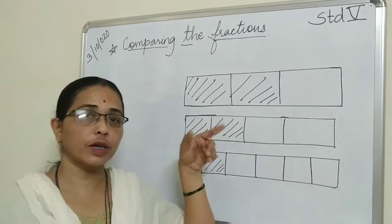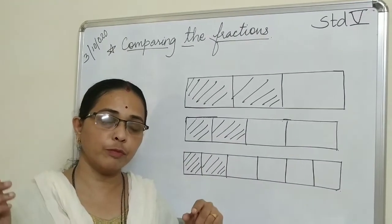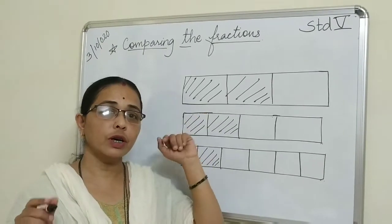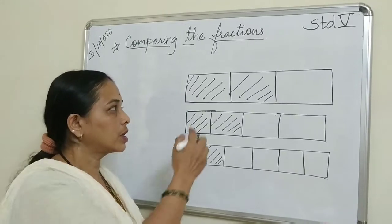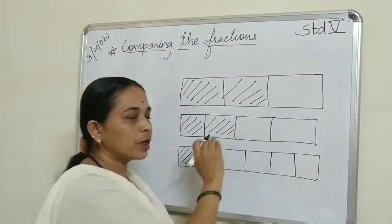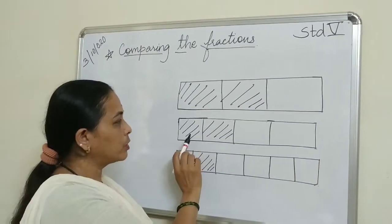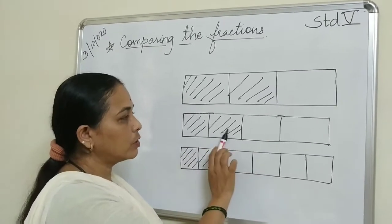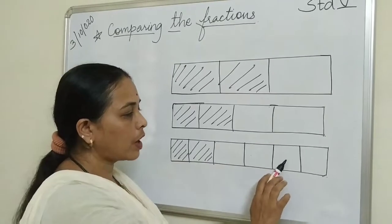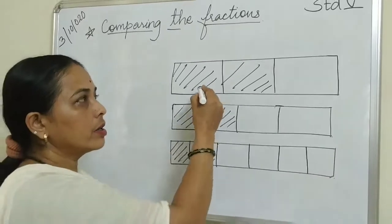Now we will learn comparison of fractions when numerators are same. Before, we saw when denominators were same; now we see when numerators are same. This paper strip is made into 3 parts, this one into 4 parts, and this paper strip is cut into 6 parts.